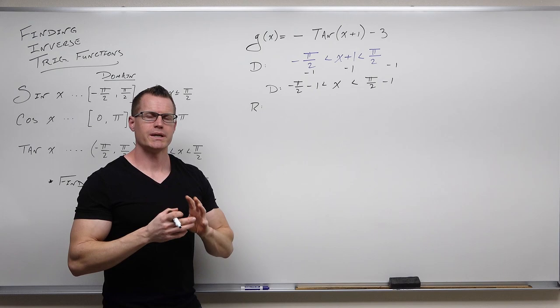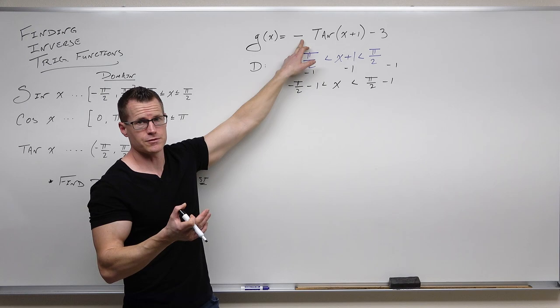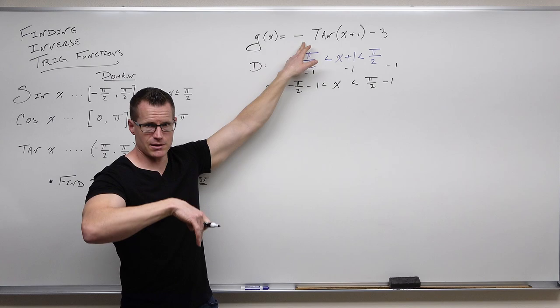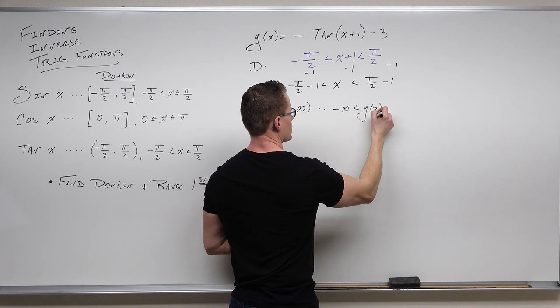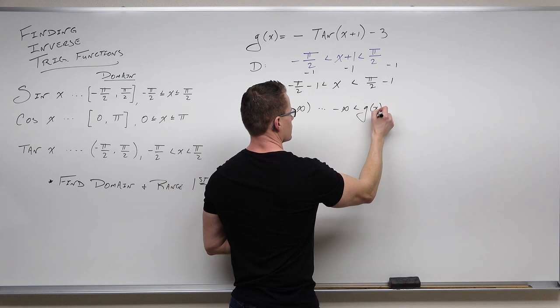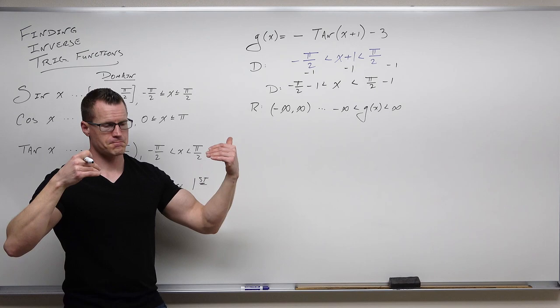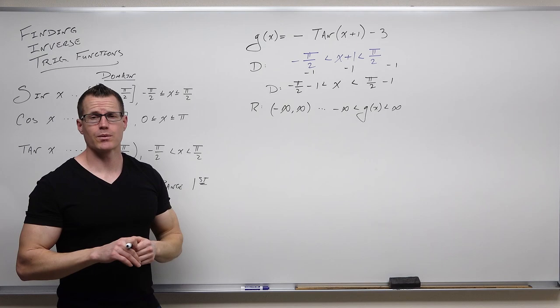As far as range is concerned, we need to understand where tangent goes. Tangent's range is from negative infinity to infinity. If tangent goes from negative infinity to positive infinity, multiplying by negative 1 and subtracting 3 still gives all real numbers. So our range is still all real numbers. Now we're going to solve for the inverse function.